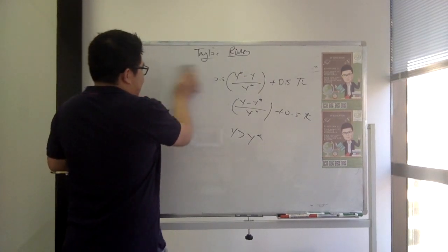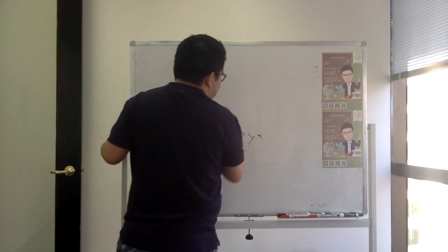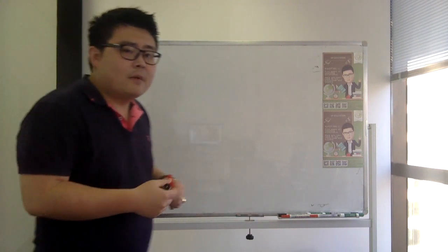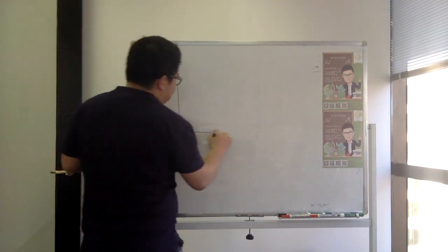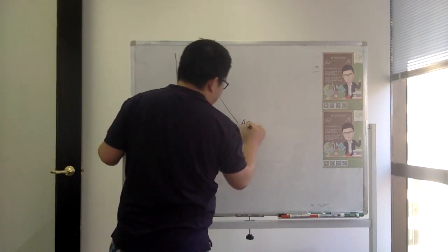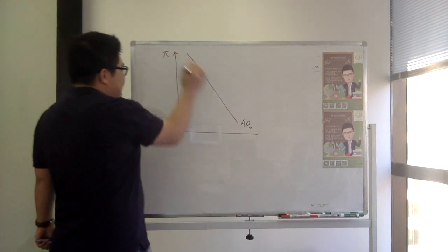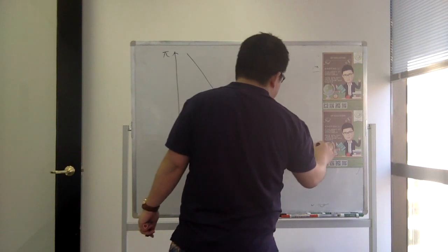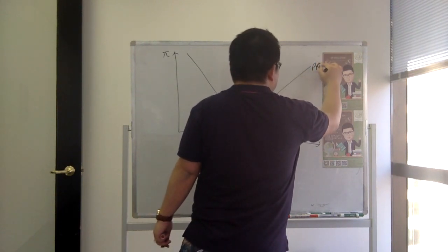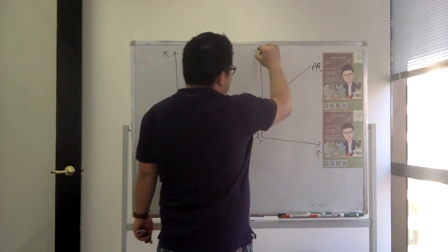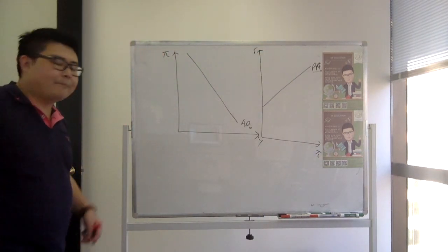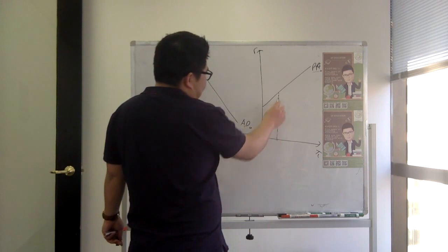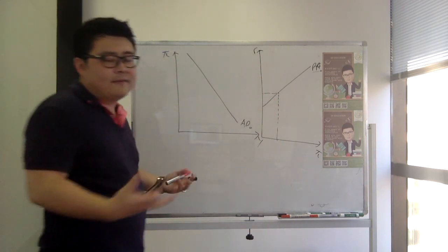The next part talks about the relationship between the aggregate demand curve and the policy reaction function. The policy reaction function — PRF0 — has inflation on one axis and real interest rate on the other. What the policy reaction function tries to say is: at any given level of inflation, what exactly is the level of interest rate?